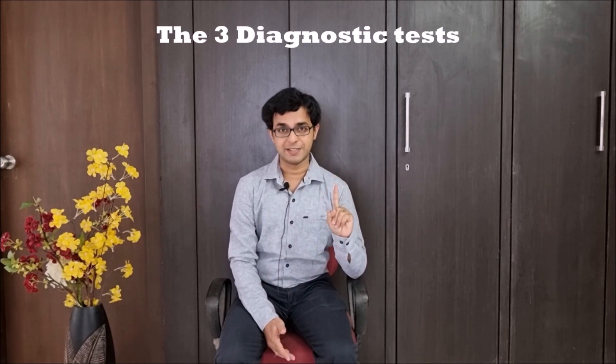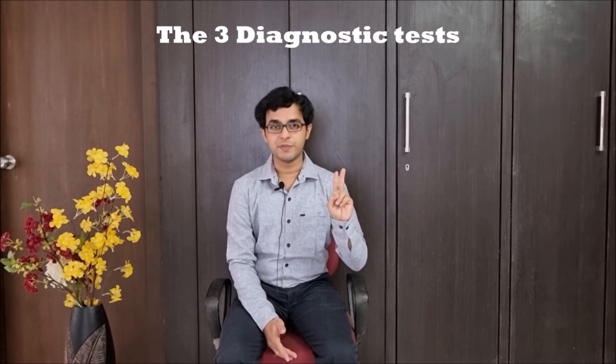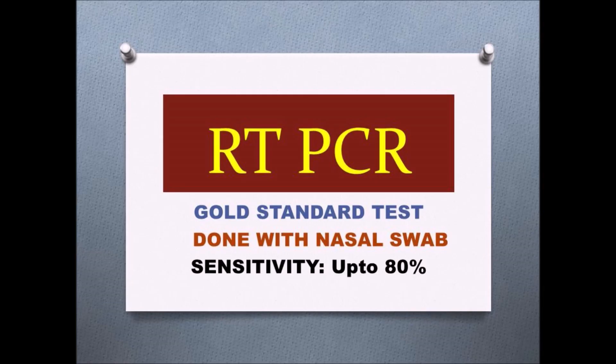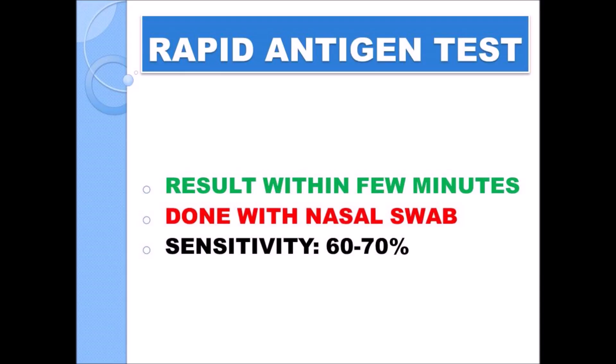There are mainly three types of diagnostic tests available these days: number one, the RT-PCR, which we all know; number two, the rapid antigen test; and number three, the HRCT scan. RT-PCR has a diagnostic sensitivity of around 70 to 80 percent, meaning out of 100 people infected with COVID, it can accurately detect around 70 to 80 people.